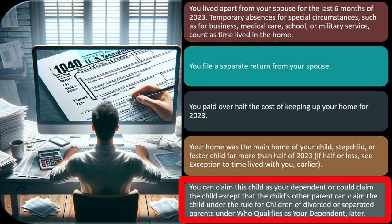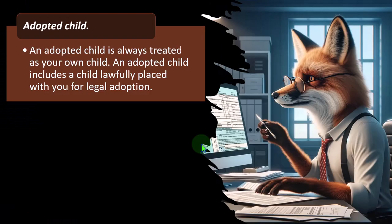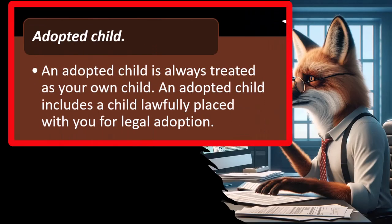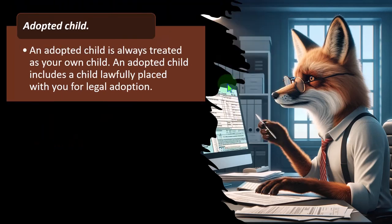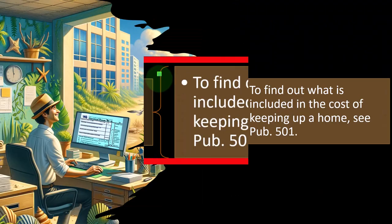The custody issue often becomes a big problem, exacerbated by the tax implications of claiming a child. If you can incorporate all the implications at the time you reach an agreement, that would be ideal. An adopted child is always treated as your own child, including a child lawfully placed with you for legal adoption. A foster child is any child placed with you by an authorized placement agency or by judgment, decree, or other order of any court of competent jurisdiction.